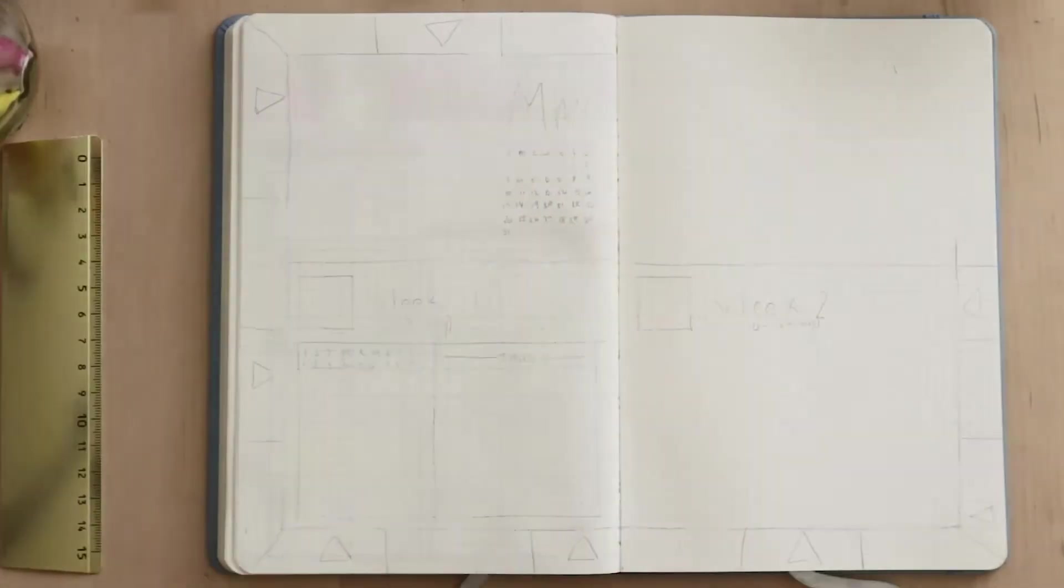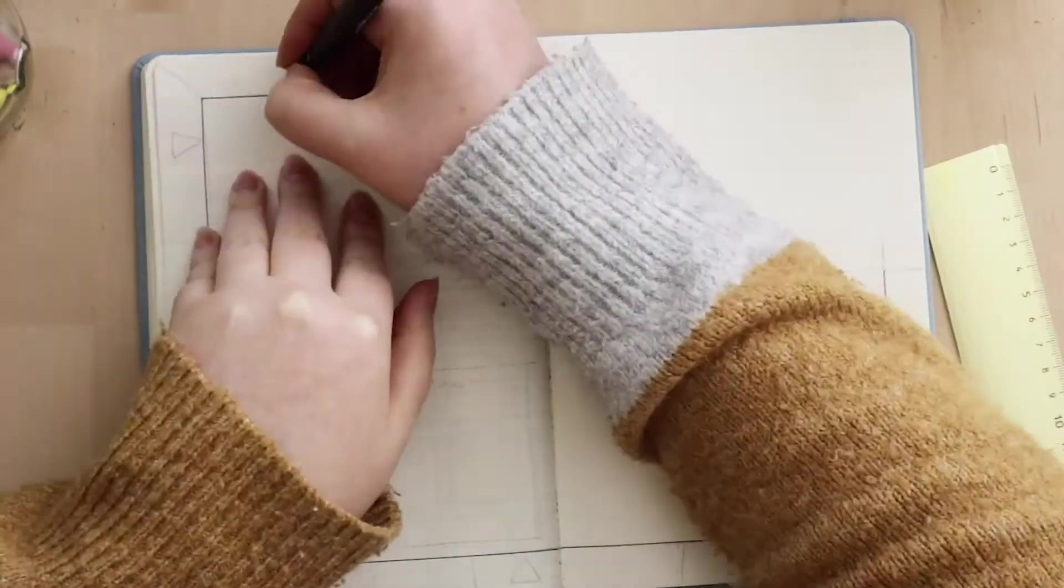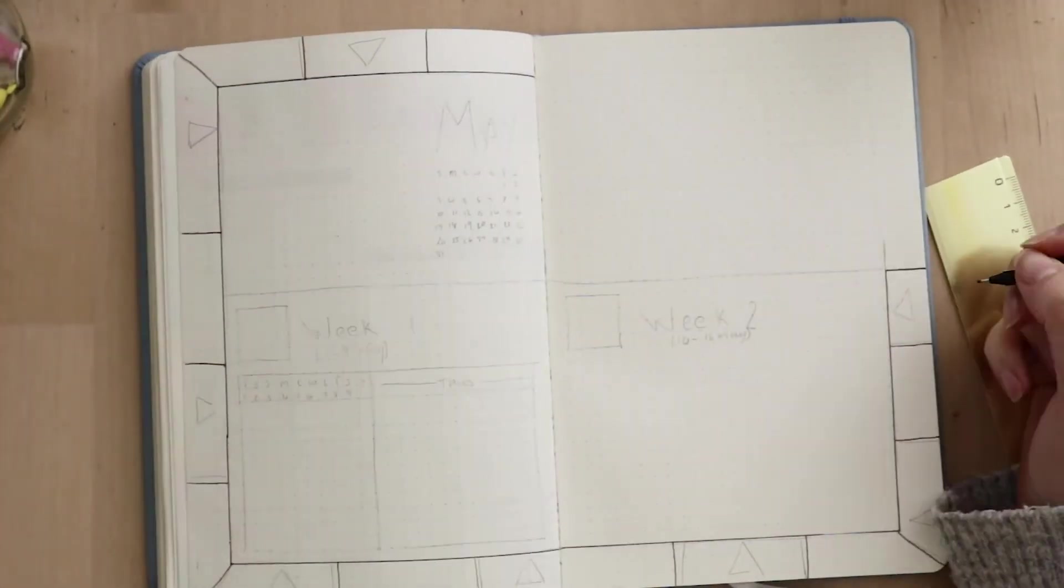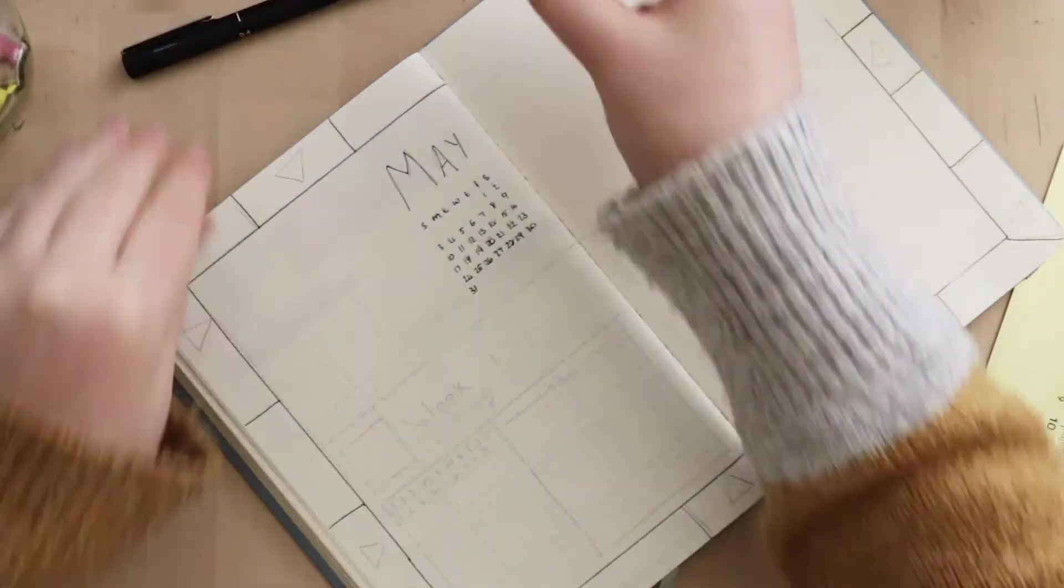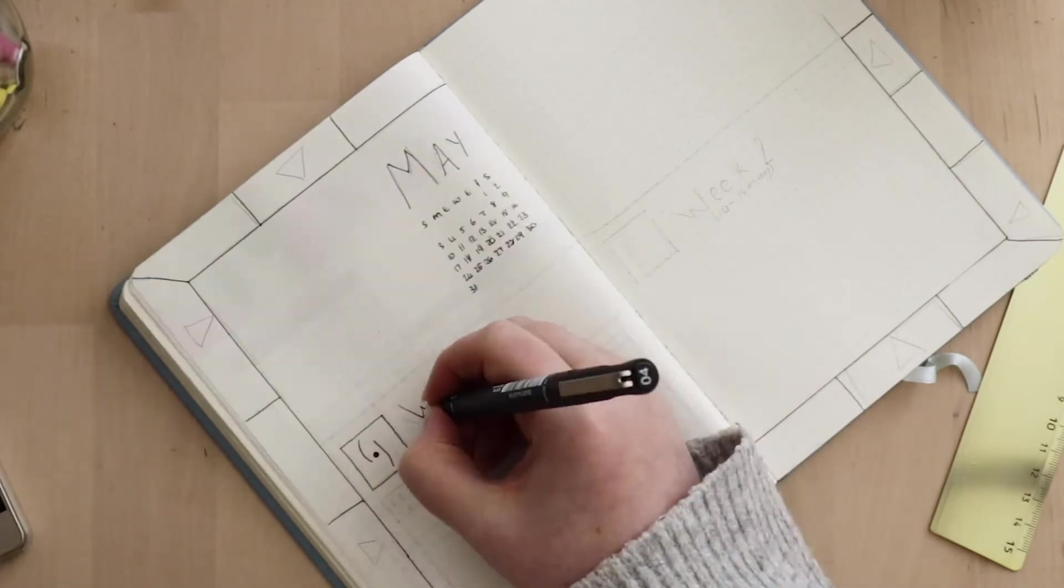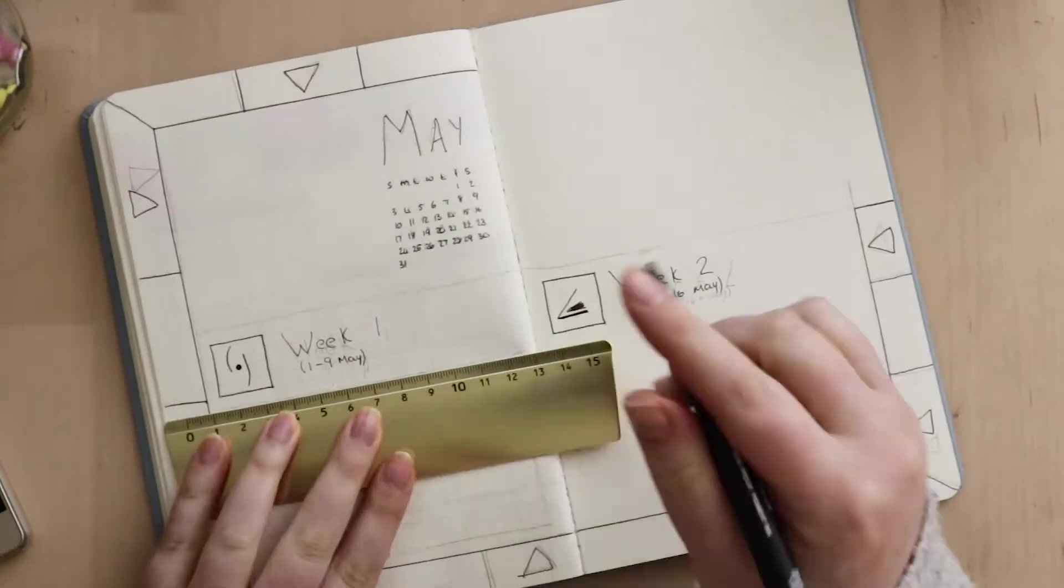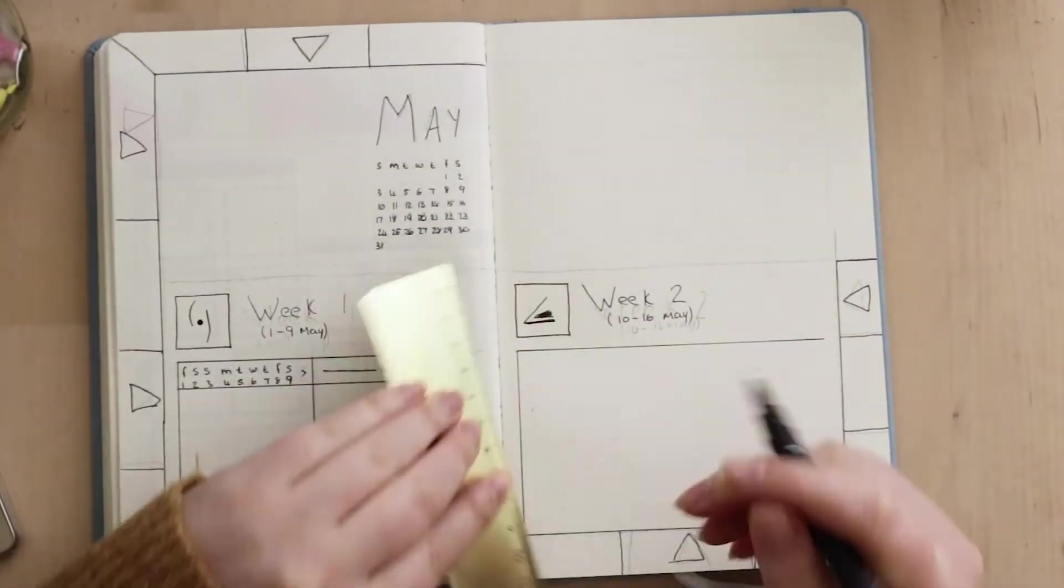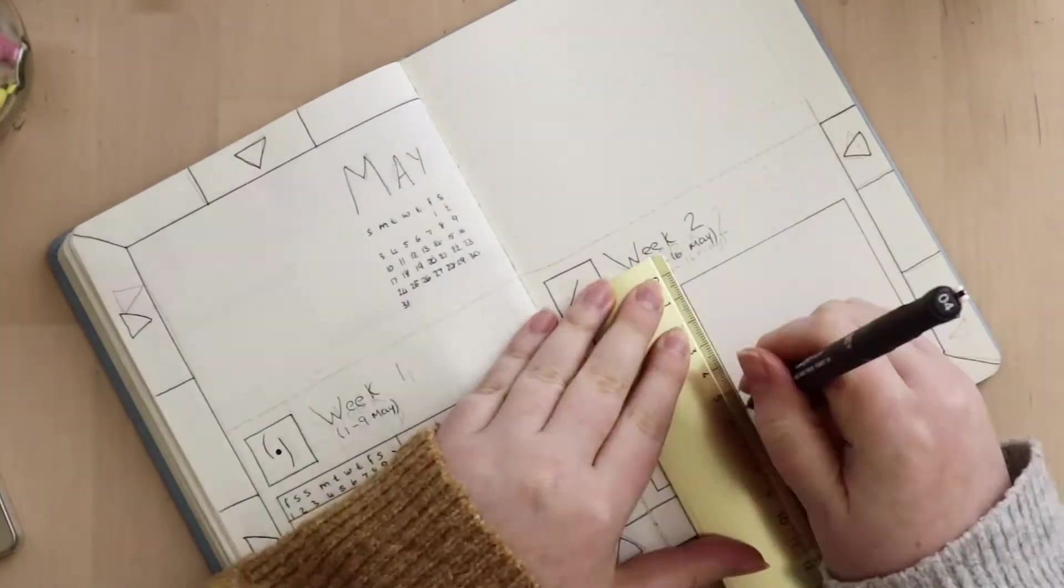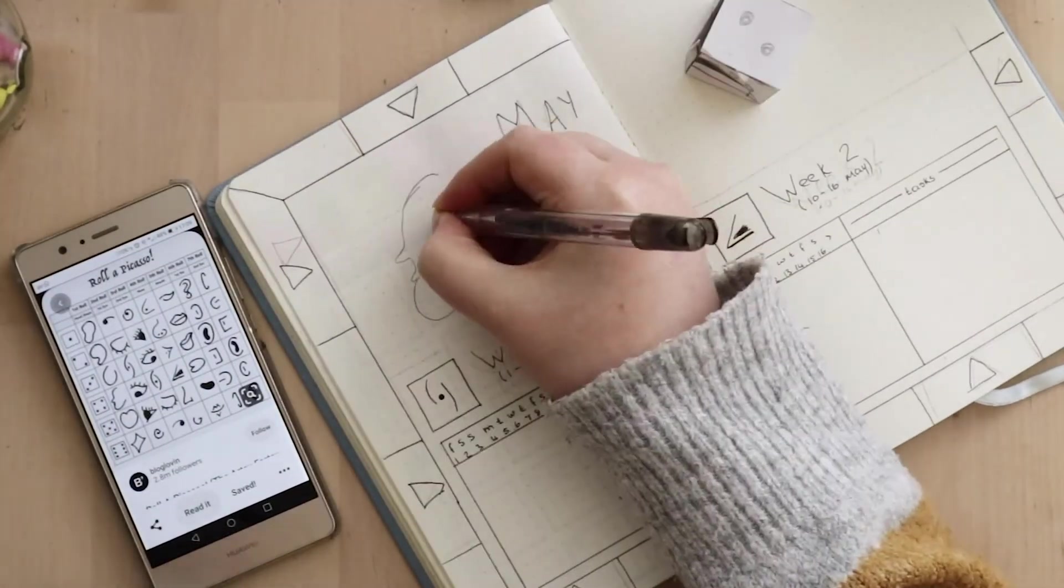If you've watched my plan with mes before, you'll know I don't do daily spreads, I do weekly spreads. That's because I use my bullet journal for personal planning, not for work planning, so my to-do lists are a bit shorter. I use what is called the Alistair method - you've got the days of the week at the top and your tasks on the right, and you kind of just assign your task with a dot for each week.